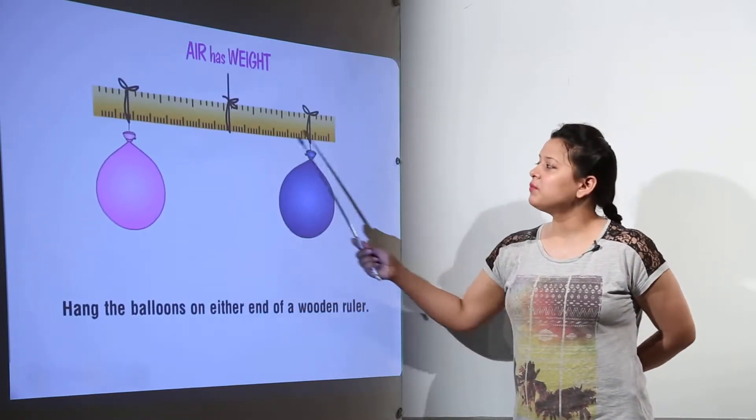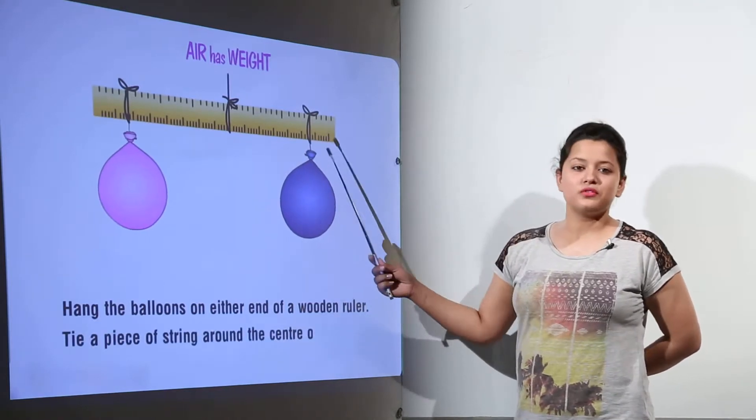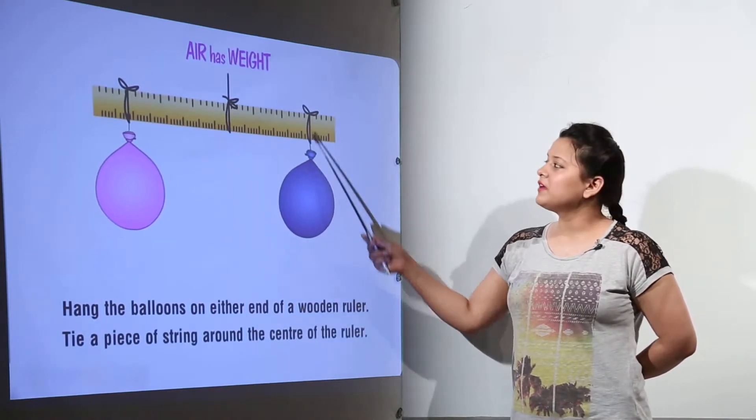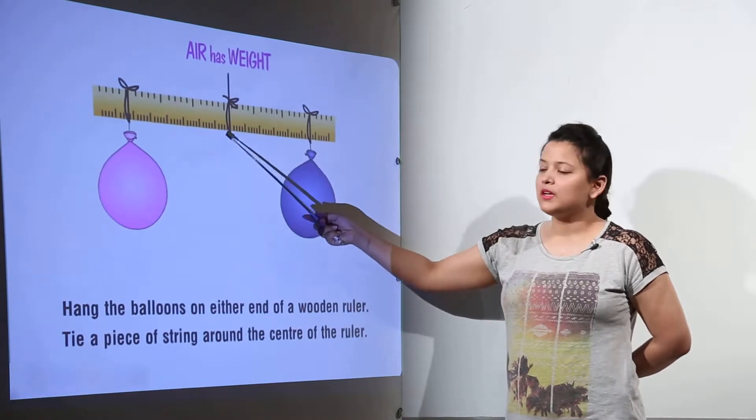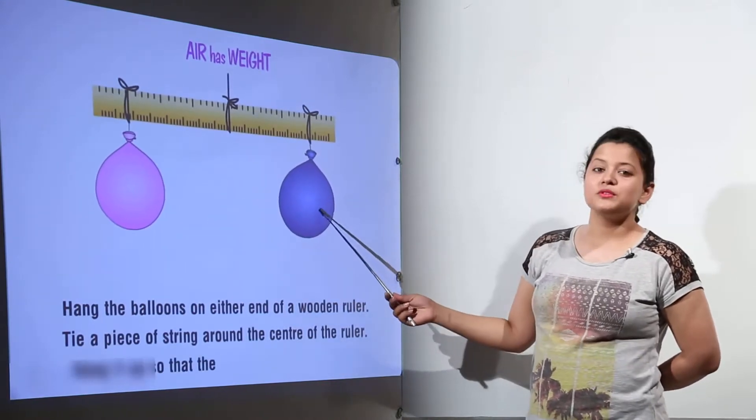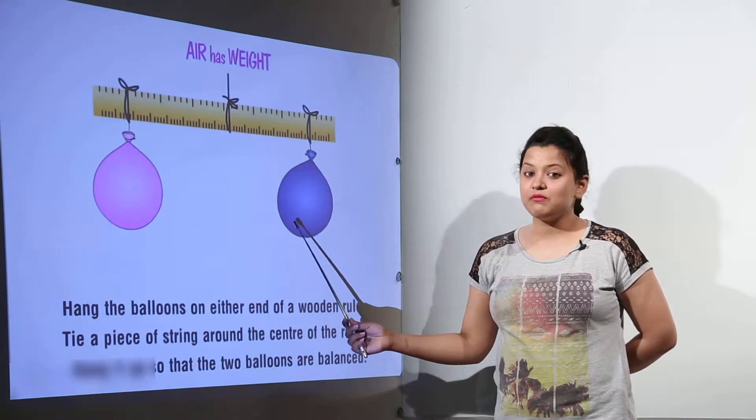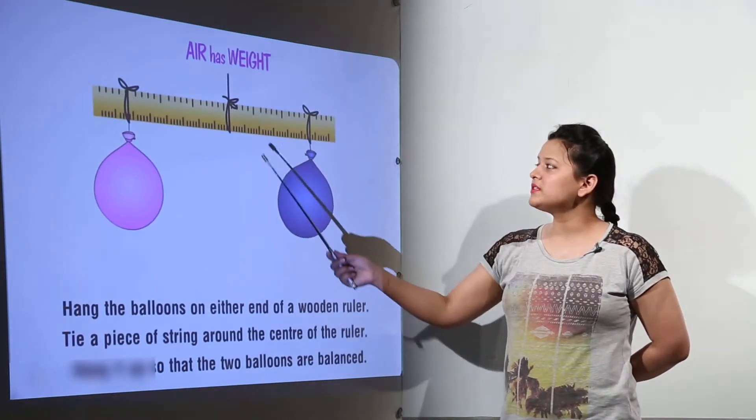We have tied both balloons on either end of a wooden ruler and tied the ruler from the middle. Since both balloons have exactly the same weight, there is no movement in the wooden ruler.